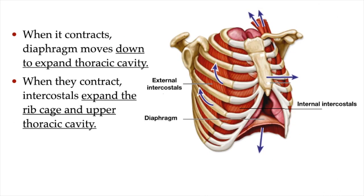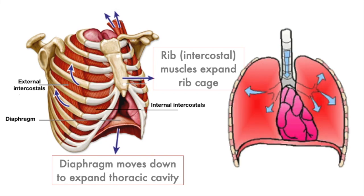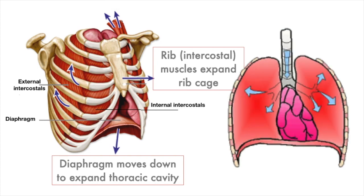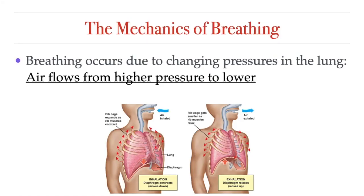When we breathe in, the diaphragm contracts, moves down, and flattens, which expands the thoracic cavity. The intercostals, or rib muscles, also contract, which expands the ribcage and upper thoracic cavity. Basically, the contraction of these muscles increases the length and diameter of the chest cavity and thus expands the lungs. The major thing that drives breathing, or pulmonary ventilation, is air pressure — namely, changing air pressure within the lungs.